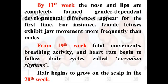By the eleventh week, the nose and lips are completely formed. Gender-dependent developmental differences appear for the first time — female fetuses exhibit jaw movement more frequently than males. This means that without looking at the genitals, through the process of observing jaw movement, it can be identified whether the baby is a daughter or a son.